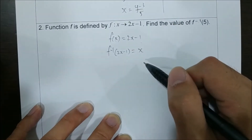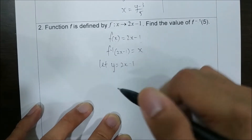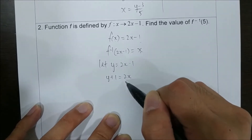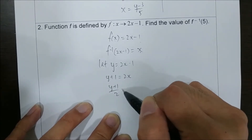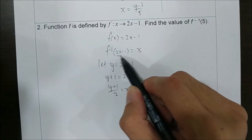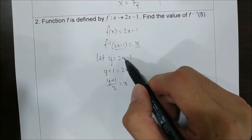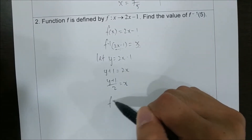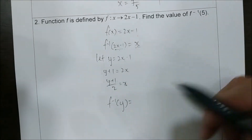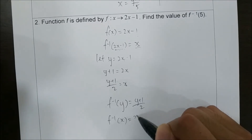These two switch positions. So the first thing is to let y equals to 2x minus 1, and then we try to find x. Move the terms: you get y plus 1 equals to 2x, and then y plus 1 over 2 equals to x. So x equals to y plus 1 over 2. The next step is to change all of this — f inverse y equals to y plus 1 over 2 — and rewrite using x: f inverse of x equals to x plus 1 over 2.